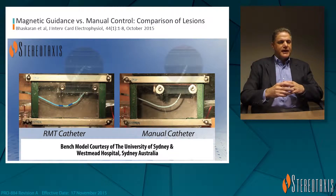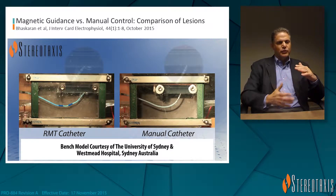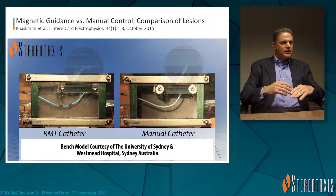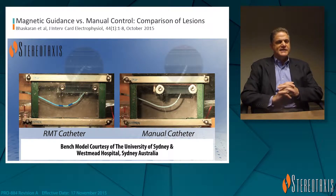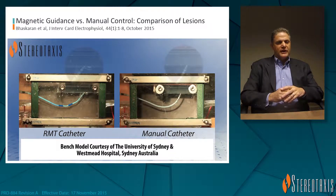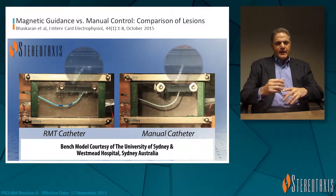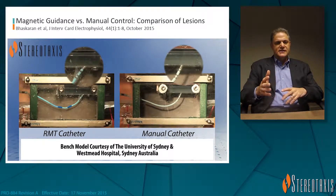On the left as this video loads will be the RMT catheter and on the right will be the manual catheter. They did this in two orientations — with the gel above, working from an inferior approach, and with the gel below, working from a superior approach. In both cases the results were the same: approximately 50% greater volume of ablation using similar energy.